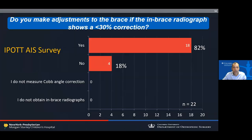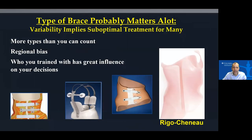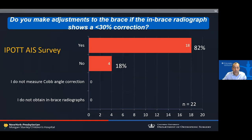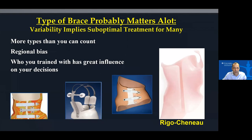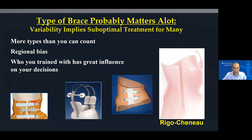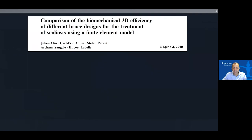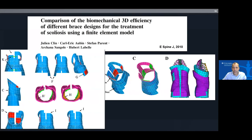If a child is compliant but we're getting no correction in the brace, how could it be any better than placebo? In a survey, about 80% of providers routinely get X-rays in the brace, but 20% don't. Regarding types of braces, there are many types — much of this represents regional bias and who you trained with. There's enough evidence to weigh one way or another, including a finite element analysis showing comparative efficacy of different brace types.